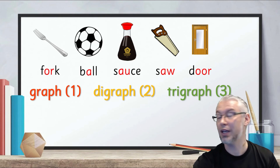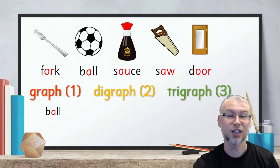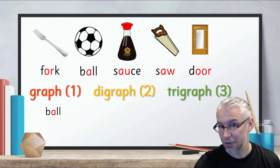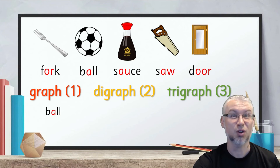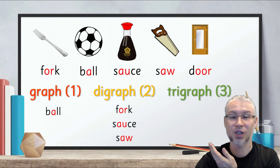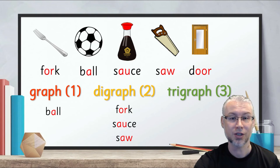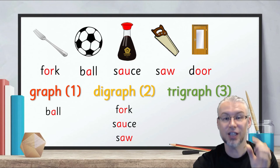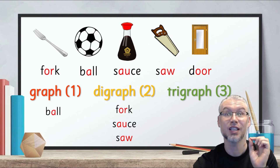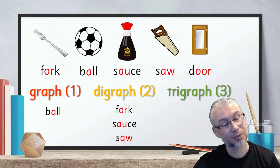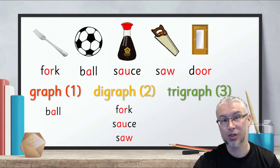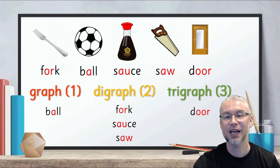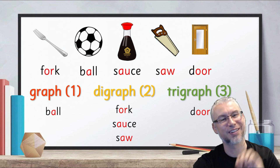Let's try and sort it. If we're looking at graphs, we only have one graph in this phoneme box — 'aw' as in ball. If we're looking at digraphs, two-letter spelling choices, we have quite a lot: fork, sauce, and saw. So 'or' as in fork, 'au' as in sauce, and 'aw' as in saw. That leaves just one trigraph. As we looked at before, 'aw' as in door — the trigraph is 'oor' in this case.